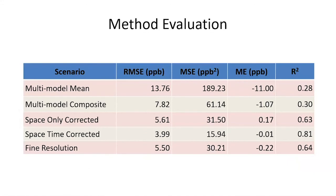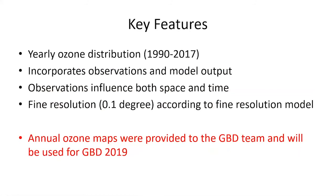To evaluate performance, we ran a leave-one-out cross-validation. A multi-model mean baseline was compared to the multi-model composite, which performed better because it was weighted by performance against observations. The space-only correction outperformed the composite, and the space-time correction further improved upon that. Adding the fine resolution step decreased performance slightly, but was necessary for the output resolution required by the GBD burden of disease assessment. Key features: yearly ozone distribution maps from 1990 to 2017 incorporating observations and model output, with observations influencing across both space and time, and fine resolution added from a fine-resolution model.